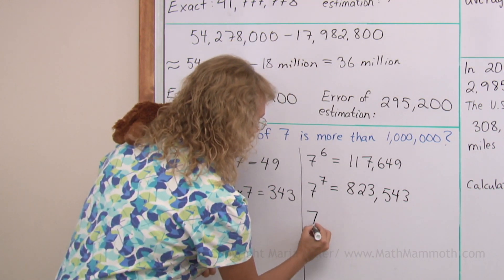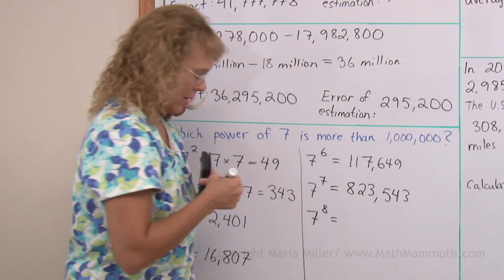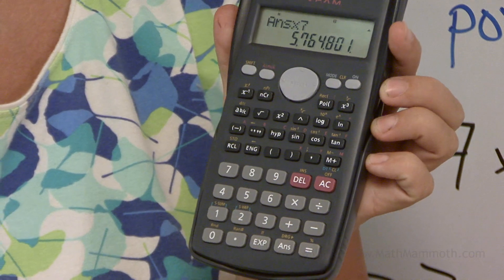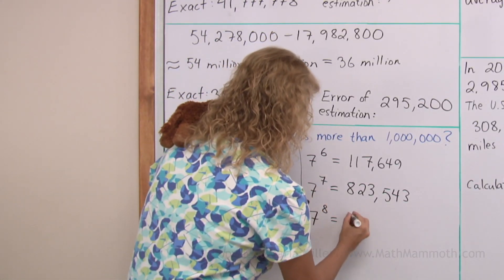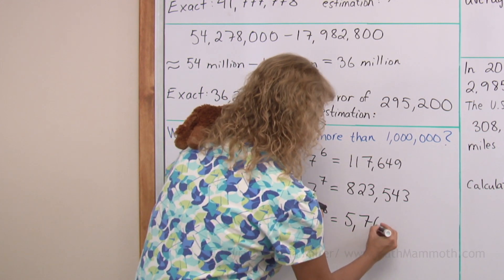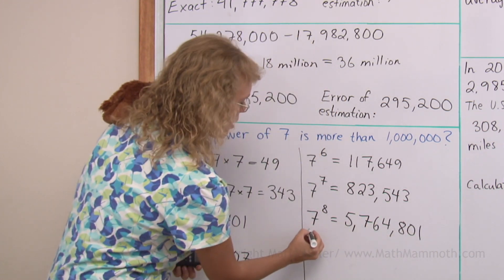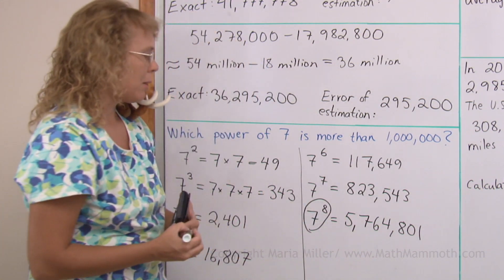But the next one surely will. Yet, we got now 5,764,801. So this is the power of seven that is more than 1,000,000.